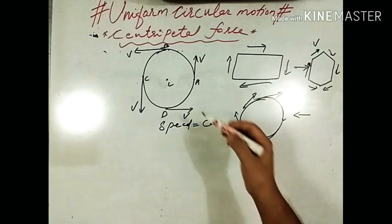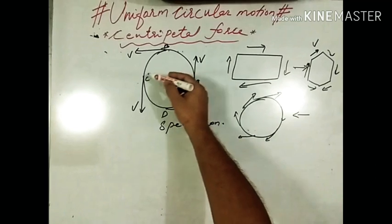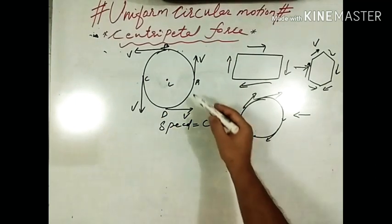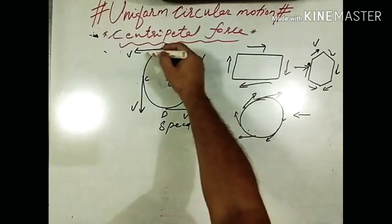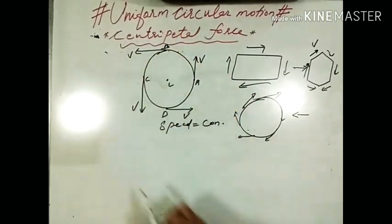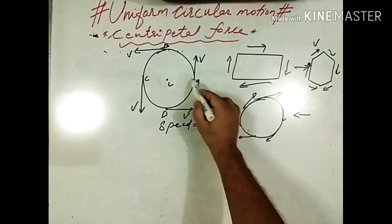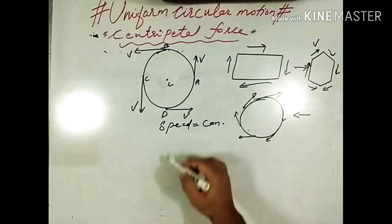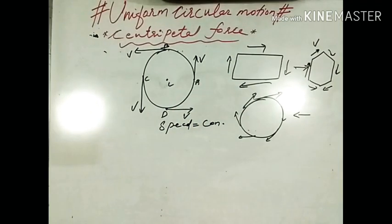Look at the direction of a particle at each point on the circle. At any point, the direction of motion is along the tangent drawn at that point — you can see this in the diagram. So, at each point on the circle, the direction of the particle continuously changes.